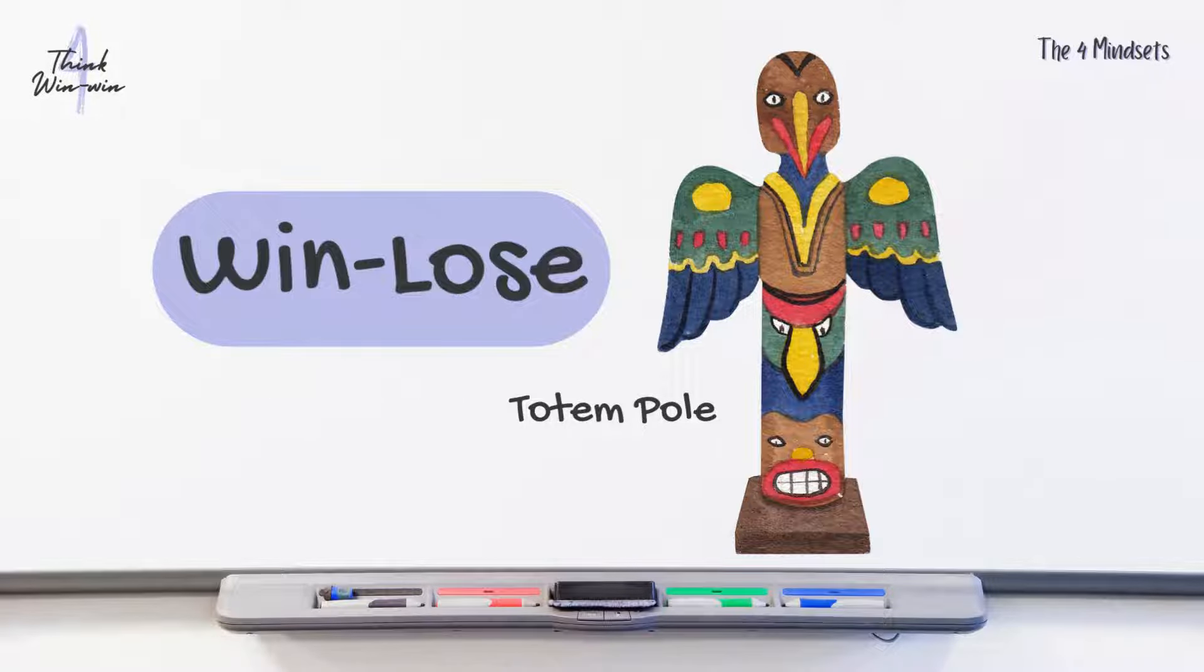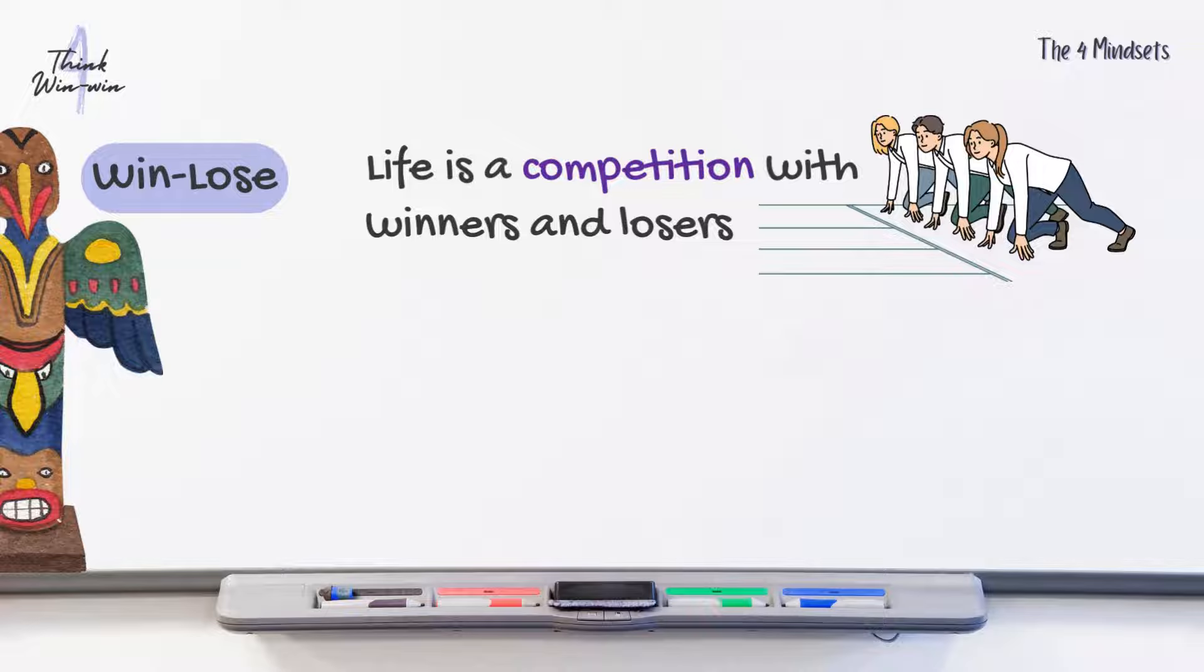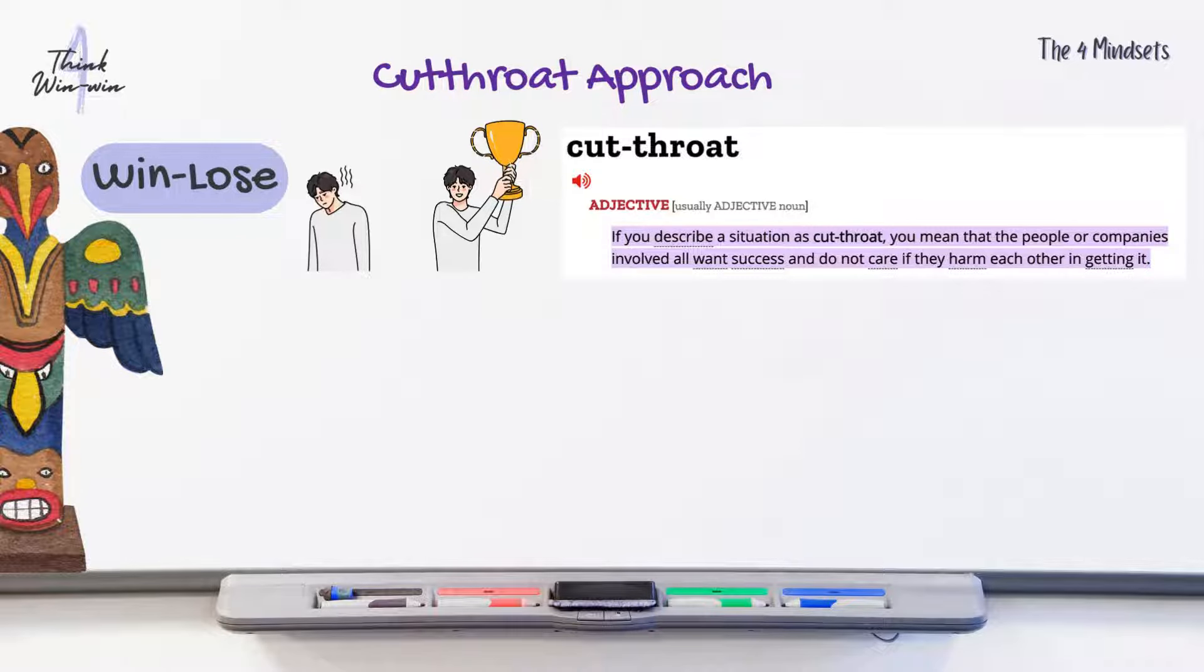The first mindset is win-lose, represented by the totem pole. This mindset sees life as a competition with winners and losers. The focus is on personal success at the expense of others. It leads to a cutthroat approach to relationships and interactions.